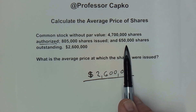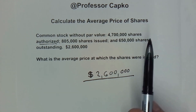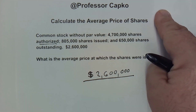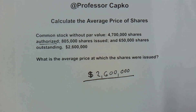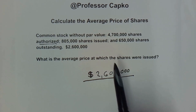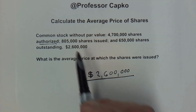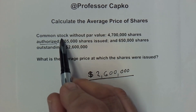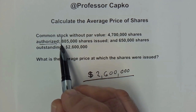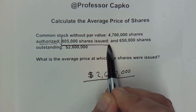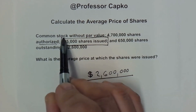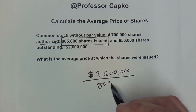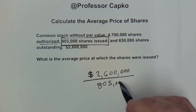That means some of the shares have been bought back and are in treasury shares. I've done some videos on treasury shares and one of them is linked up here. For purposes of this calculation, all we need to look at is the number of shares that have been issued, and that would be the 805,000 shares.